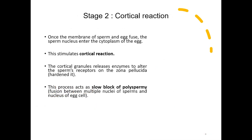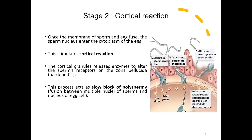The following stage is cortical reaction. It is stimulated by the previous stage — the fusion of the sperm membrane and egg membrane. The cortical granules release enzymes to alter the sperm receptors on the zona pellucida, thus preventing polyspermy to ensure only one sperm can fertilize the egg.